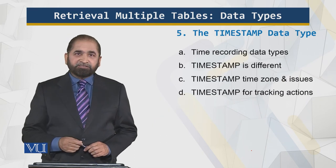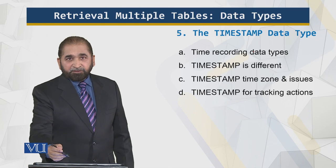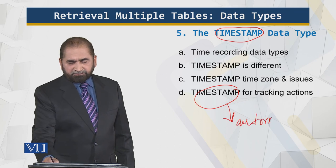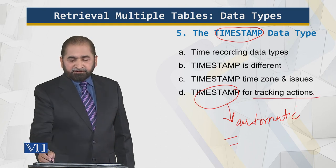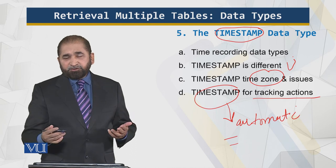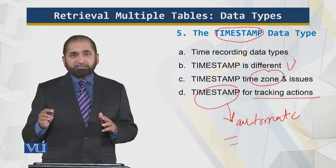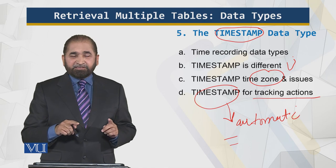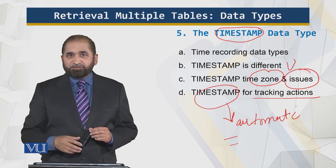Finally, the timestamp data type — this is all automatic. It stores event tracking and records actions automatically. One issue to be aware of is that it uses a format similar to GMT to store the time. When the server changes the time storage format, data that was stored using the timestamp earlier may not give correct results. So you have to be careful and aware of these issues.